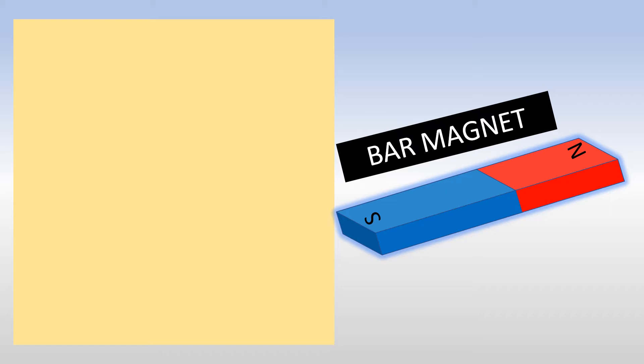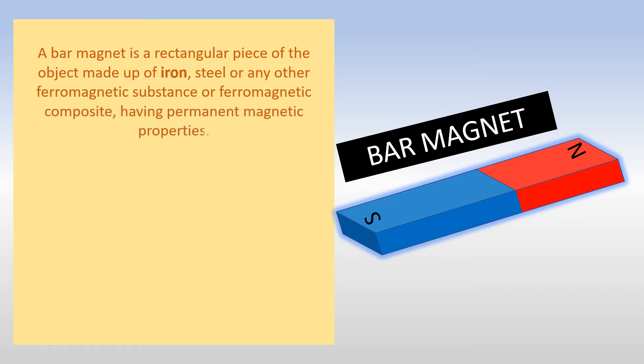Let's see what a bar magnet actually is. A bar magnet is a rectangular piece of object made up of iron, steel or any other ferromagnetic substance or ferromagnetic composite, having permanent magnetic properties.